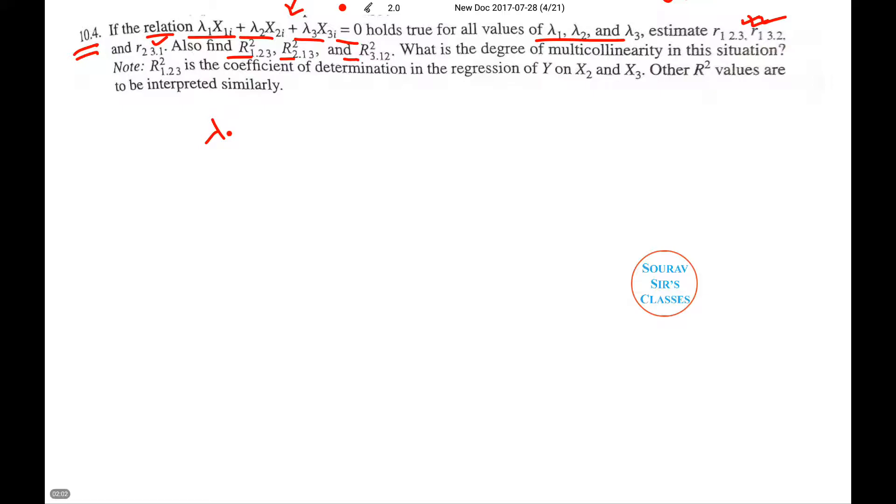Now, let us write this equation. So here we have three variables, three constants equal to 0. Now we can write X₁ᵢ as this. I am shifting apart from X₁ᵢ; I will shift everything to the right-hand side.